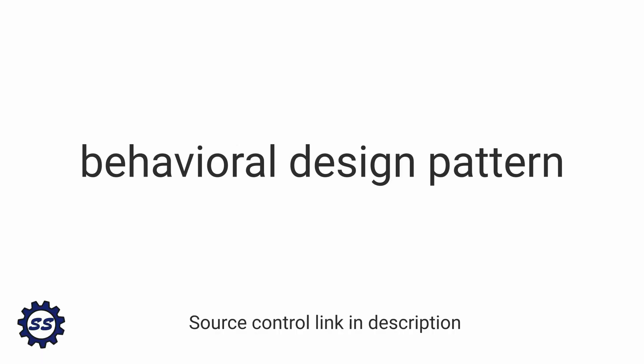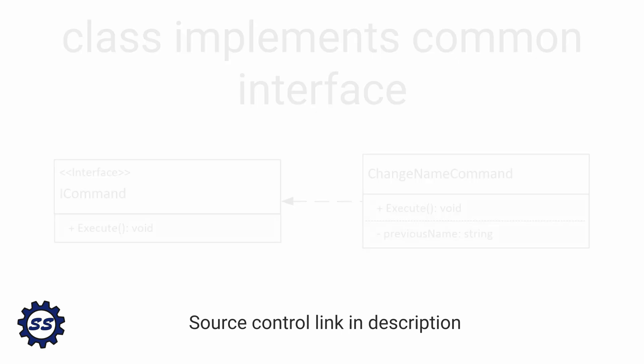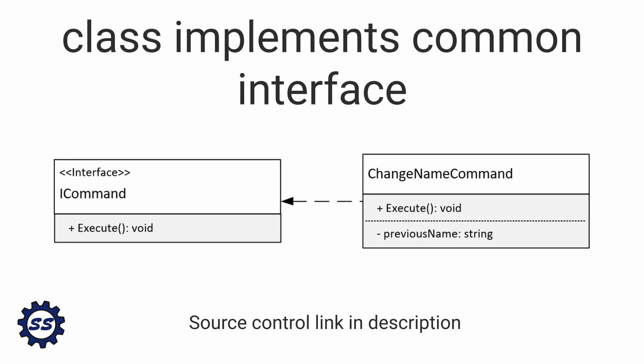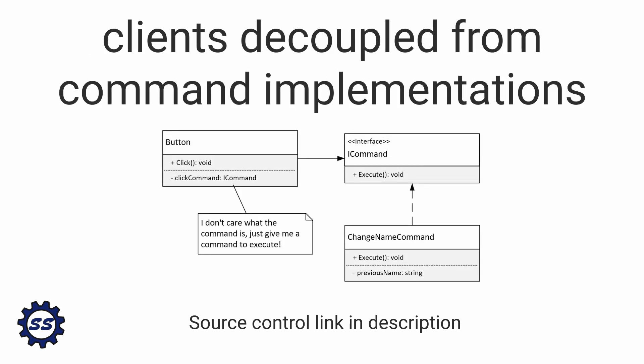The command pattern is a behavioral design pattern in which an operation and everything related to it is wrapped inside of a class. This class implements a common interface, usually the command interface, which exposes one method — typically execute — and that method executes the operation the command holds. The key benefit is that clients just need to depend on that command interface, and by doing so they can support various commands without having to change.